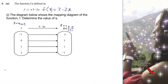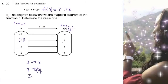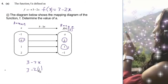We substitute x values into the function 3 minus 2x to get our y values. If I substitute x equals 0, then 2 times 0 is 0, so the answer is 3, which matches the range. When x equals 1, I replace x with 1: 1 times 2 gives me 2, so 3 minus 2 gives me 1, which also matches the range.